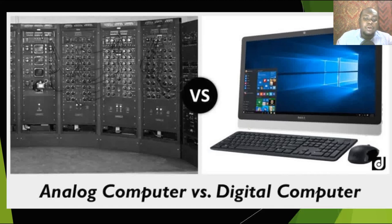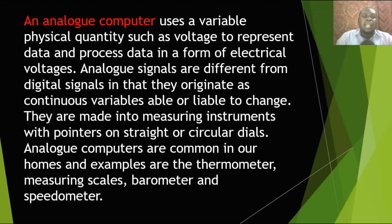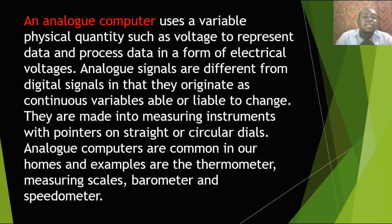An analog computer uses a variable physical quantity such as voltage to represent and process data in the form of electrical voltages. Analog signals are different from digital signals in that they originate as continuous variables, liable to change. They are made into measuring instruments with pointers on dials or circular displays. Analog computers are common in our homes; examples include the thermometer, measuring scales, barometer, and the speedometer.